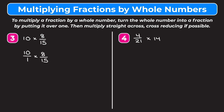We check if we can cross reduce. Ten and fifteen are both divisible by five: ten divided by five is two, and fifteen divided by five is three. Multiplying straight across: two times eight gives us sixteen in the numerator, and one times three gives us three in the denominator.